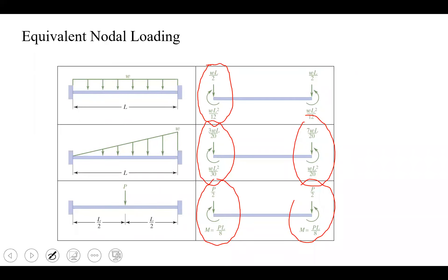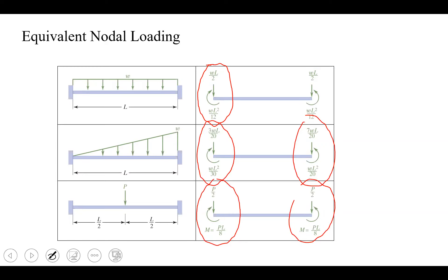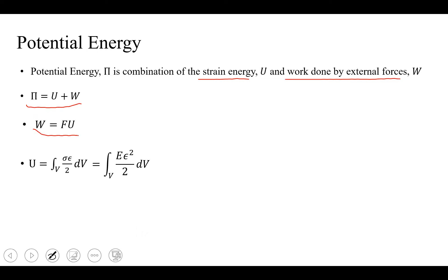Once we have the equivalent load on each node, to solve FEA we need to find a stiffness matrix. Similar to 2D elements, we find the stiffness matrix based on potential energy — the combination of strain energy and the work of external forces. Potential energy is shown by pi = U plus W. The work of external forces is simply F times u. Potential energy (strain energy) is defined as one-half sigma epsilon dV. We use the same equation for beam as for quadrilateral or triangular elements; what we substitute for strain makes the difference.